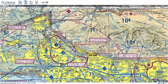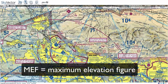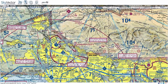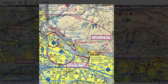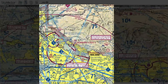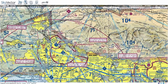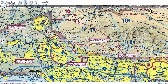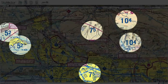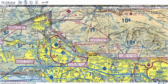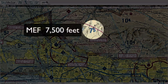Another important bit of information on sectional charts is the maximum elevation figure of a quadrant. A quadrant is a 30-minute by 30-minute area of latitude and longitude on these sectional charts. These are indicated in very large text in blue. Right here in this quadrant, the maximum elevation figure is 7,500 feet.